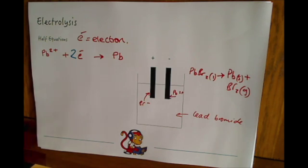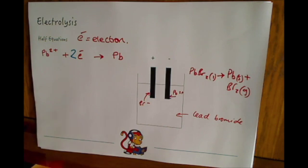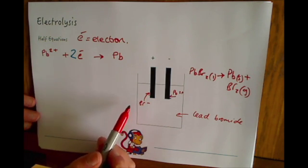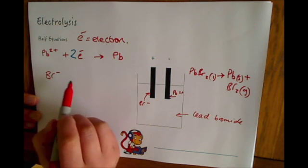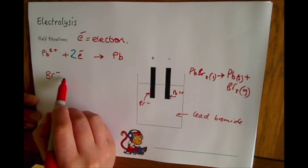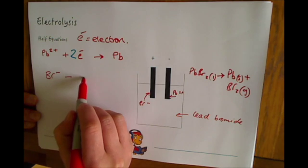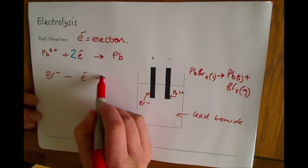Then for the bromide ions we would write that the bromide ions are losing electrons, so we could write it like take away electrons and they are turning into bromine.